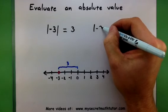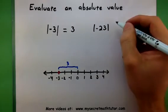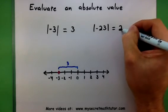So even if you have a very large number like negative 23, and you're taking the absolute value, just make it positive. Positive 23.